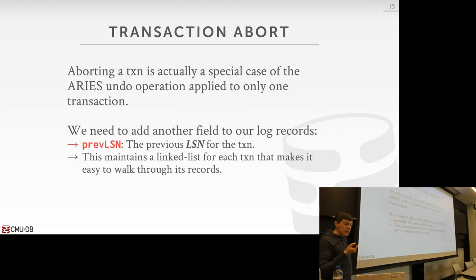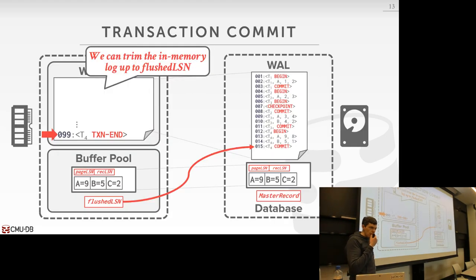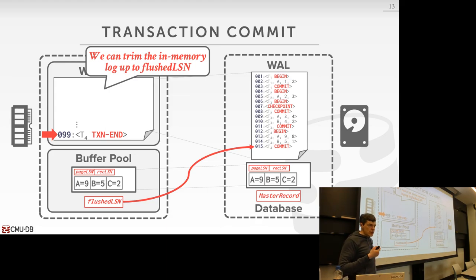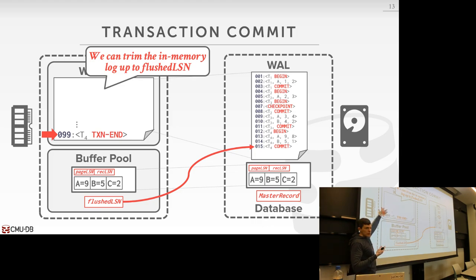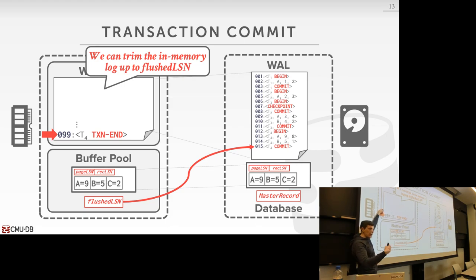For aborts, this is going to be different than what we did before. Transaction end is an internal marker for the recovery algorithm to say that you will never see this transaction ever again — you will never see any additional log records for this transaction. Because there's stuff you're going to do after aborts that the outside world doesn't see — it's stuff we have to do to reverse the changes.